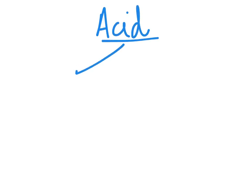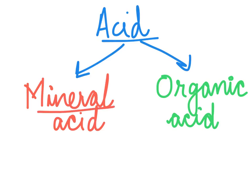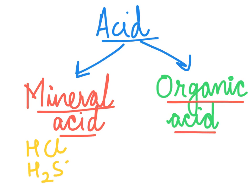Before moving on to the properties of acids, let's learn about their types. Acids are of two types: mineral acids and organic acids. Examples of mineral acids are HCl (hydrochloric acid) and H₂SO₄ (sulfuric acid). Examples of organic acids are the acids present in food items, as listed in Table 6.1.